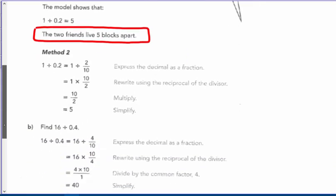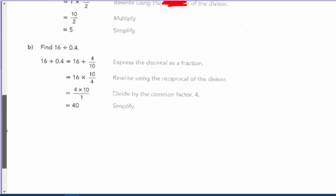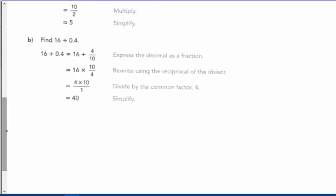The second way is to convert two-tenths to its fraction and multiply by the multiplicative inverse, ten-halves, which gives you five. The second example: 16 divided by four-tenths, done as 16 times the multiplicative inverse ten-fourths. When you cross-cancel, you get four times ten in the numerator, which gives you 40.